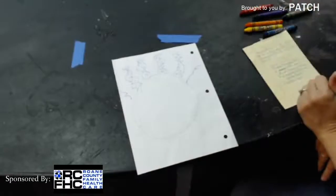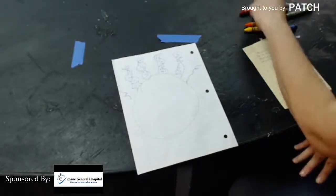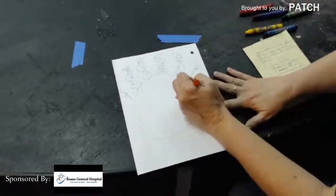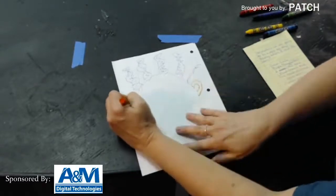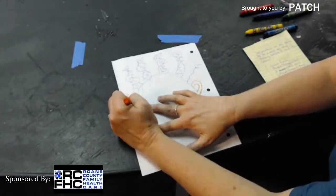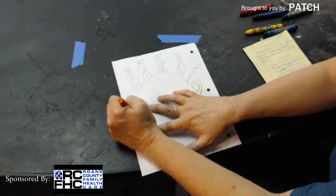Now we need two little ears. Whatever color ears you want to make. I'm going to make my ears orange. On the other side. All right.